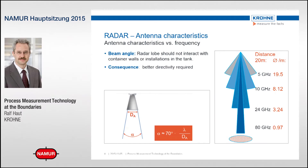Different antenna characteristics apply at different frequencies. One key condition is that the radar lobe should not interact with container walls or installations in the tank, which requires better directivity. The aperture angle is approximately 70 degrees multiplied by the wavelength divided by the diameter of the aperture — a formula that defines the width of the radar lobe.